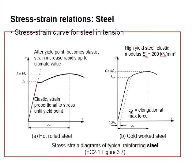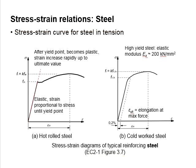This figure shows a stress-strain diagram of typical reinforcing steel as obtained from figure 3.7, Eurocode II, part 1. The two types shown are hot-rolled steel and cold-worked steel.